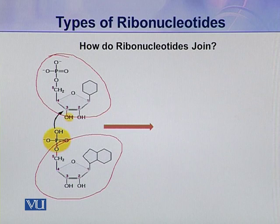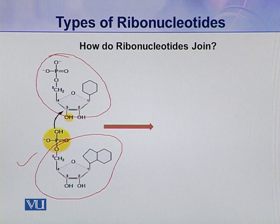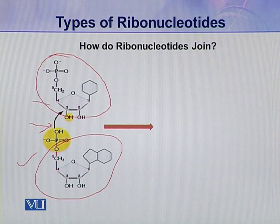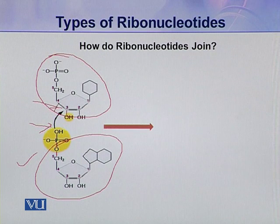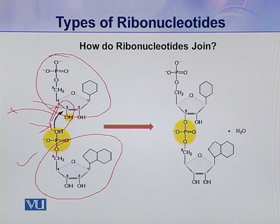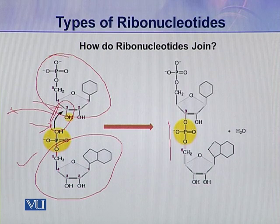In this ribonucleotide, one phosphoric acid is attached to its 5-carbon through an ester linkage. The hydroxyl group present in this phosphoric acid attacks the hydroxyl group present on the pentose of the next ribonucleotide, so a condensation reaction takes place. A water molecule is removed and these two ribonucleotides join together to make a dinucleotide, in which the two nucleotides are linked through phosphodiester linkage.